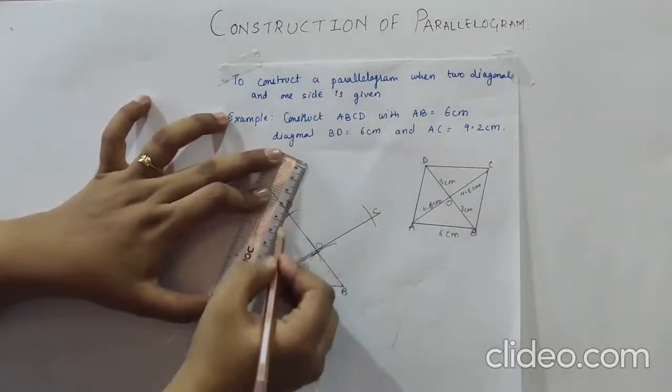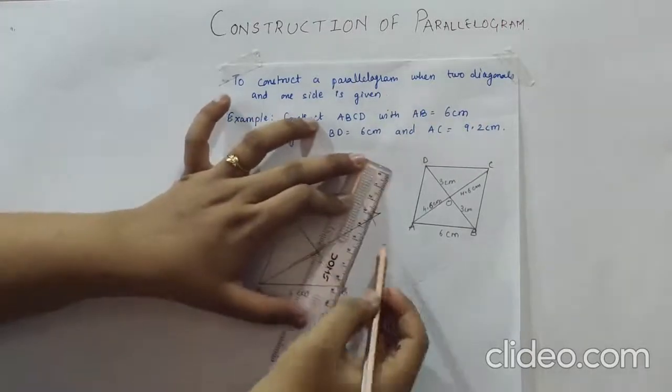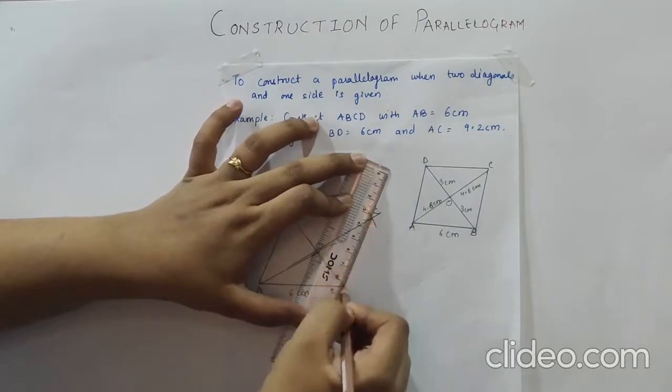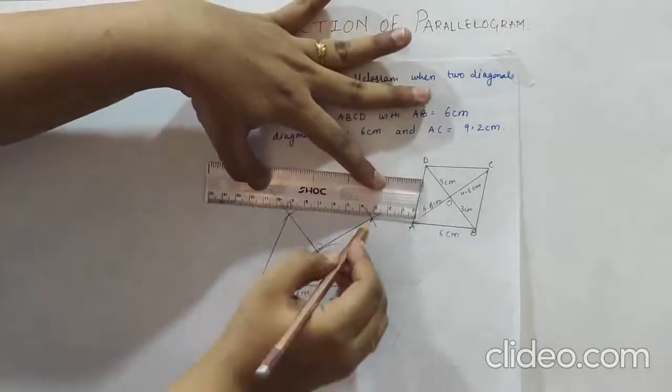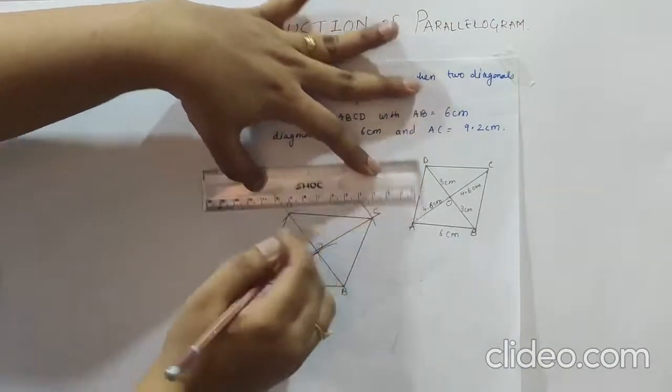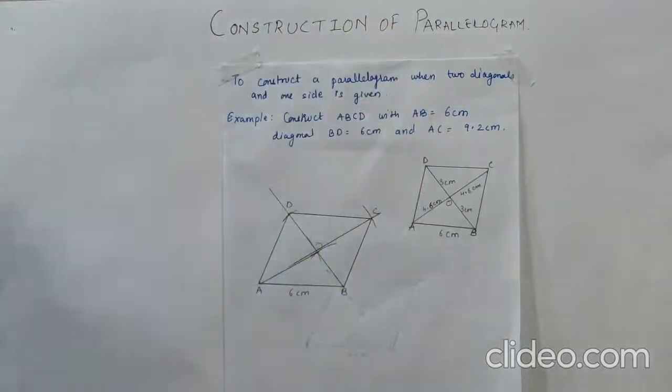The last step will be joining all these vertices. So here we have the other side AB, BC and CD. And we have our required parallelogram ABCD. So these are the 3 types of construction for a parallelogram.